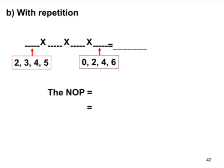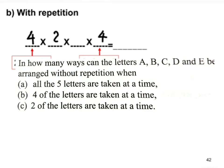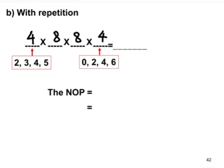For part (b), digits can be repeated. For the last place we choose even digits: zero, two, four, six — four ways. For the first place: two, three, four, five — four ways. Since repetition is allowed, we still have eight digits for each of the middle places. The answer is 4 × 4 × 8 × 8 = 1024, but we must subtract one to exclude the number 2000, giving 1023.